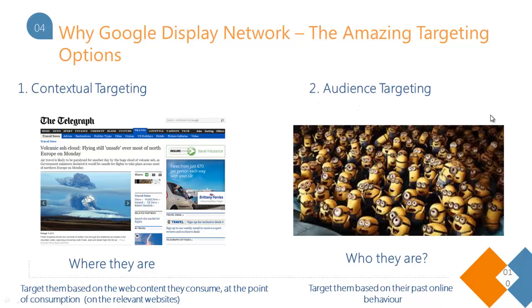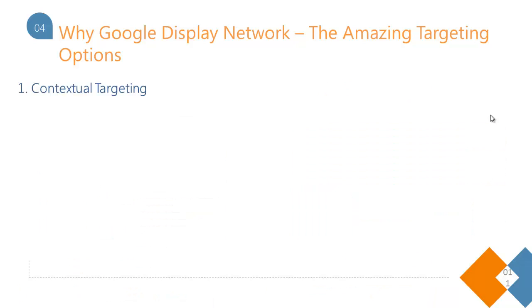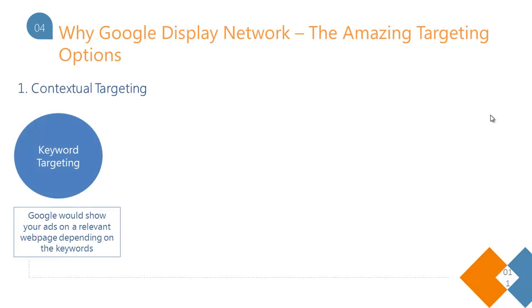The second type of targeting is audience targeting, which depends on who these people are. This includes everything from demographics to their past online behavior. You will be able to target people based on how they have behaved in the past. There are multiple targeting options that come under each of these categories.